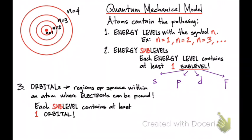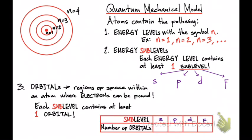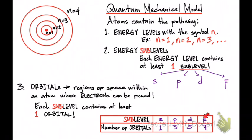Electrons reside within the orbitals and can't reside outside them. Each orbital can hold a maximum of two electrons, regardless of what type of orbital it is. So an S orbital can hold a maximum of two electrons, a P orbital also holds a maximum of two electrons, and D and F orbitals also hold a maximum of two electrons.